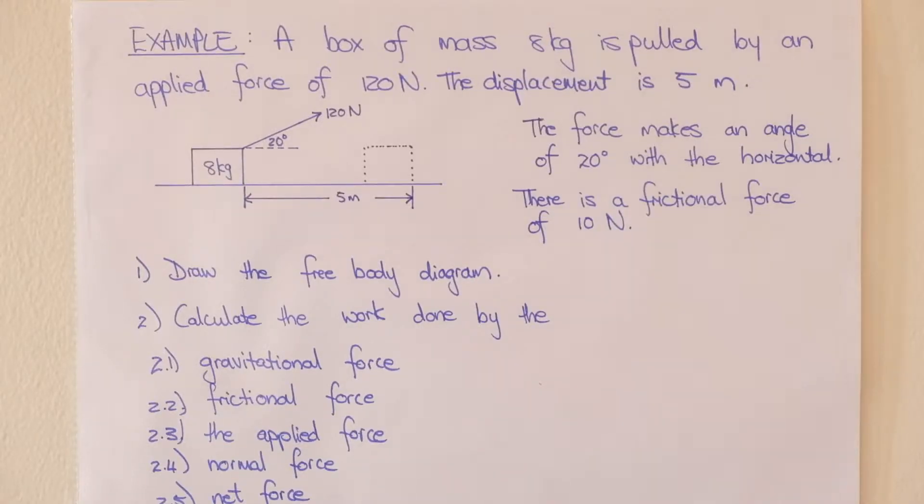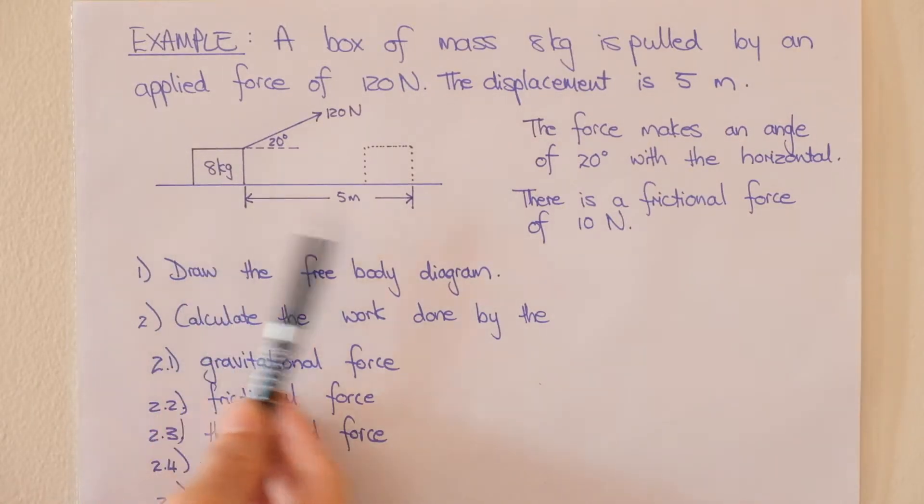Here is our first example. A box of mass eight kilograms is pulled by an applied force of 120 newtons. The displacement is five meters so the box starts off in this position and ends over there. The force makes an angle of 20 degrees with a horizontal and there's a frictional force of 10 newtons.